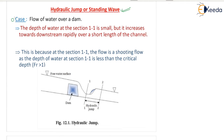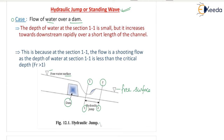We are going to see a case: flow of water over a dam. In this diagram, the dam is present here and this is the free surface of water — the symbol representing the free surface where atmospheric pressure is acting. This is section 1 and section 2, and this is the hydraulic jump from 1 to 2.